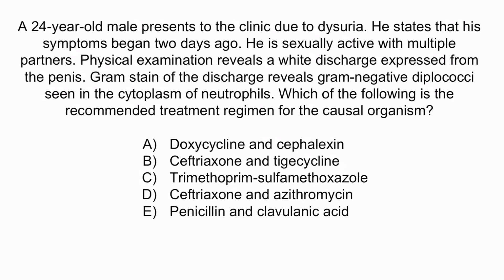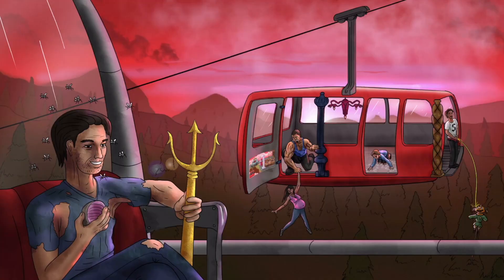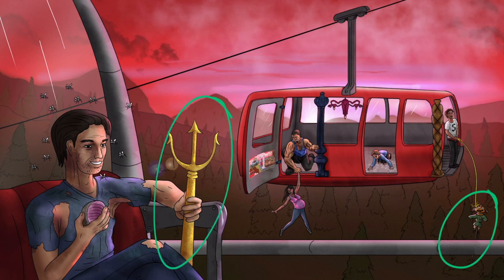From the question stem, you notice that the patient has dysuria, penile discharge, and a gram stain that has revealed gram-negative diplococci — together, this information is consistent with Neisseria gonorrhea. The correct answer is D: ceftriaxone and azithromycin. All other answer choices are distractors and not recommended. From the image, the scarecrow represents macrolides and the trident represents ceftriaxone. So the recommended treatment is ceftriaxone for adequate gonococcal coverage with the addition of a macrolide such as azithromycin for a possible chlamydia co-infection. With that, we've covered everything you need to know about Neisseria gonorrhea.